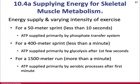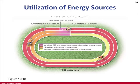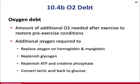Oxygen debt is what you accumulate during intense activity. To return to pre-exercise conditions, more oxygen is needed to replace oxygen on hemoglobin and myoglobin, replenish glycogen stores, ATP and creatine phosphate stores, and convert lactic acid back to glucose — all of which requires oxygen. Without oxygen, we can't run the electron transport chain, and without that we can't generate enough ATP to accomplish all of this.